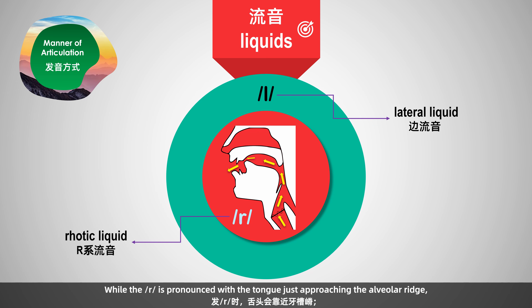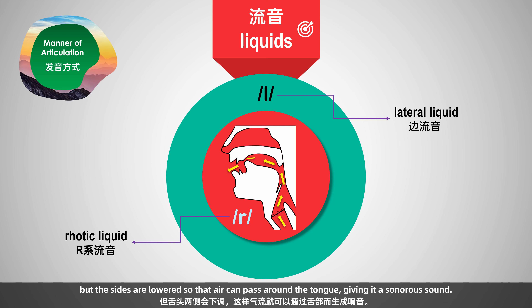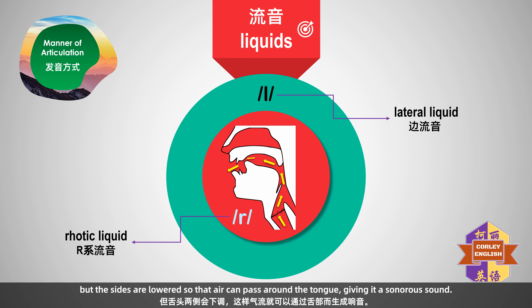/r/ is a rhotic liquid, while /l/ is a lateral liquid. /r/ is pronounced with the tongue just approaching the alveolar ridge. For /l/, the tongue actually does touch the alveolar ridge, but the sides are lowered so that air can pass around the tongue, giving it a sonorous sound.